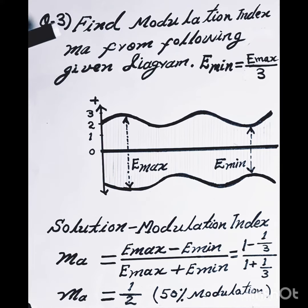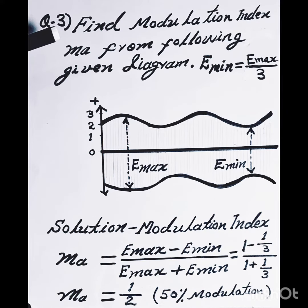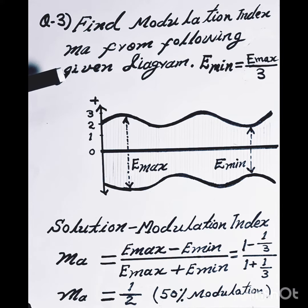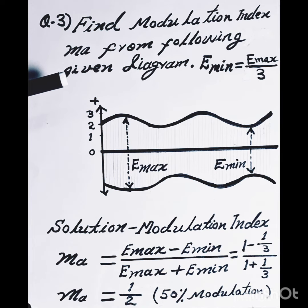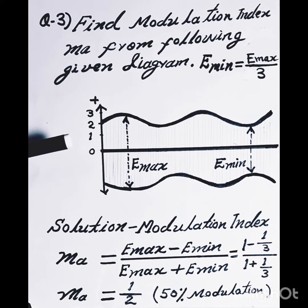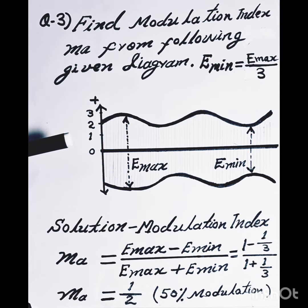Find modulation index MA from the following given diagram. E minimum equals E maximum upon 3, meaning E maximum equals 3 times E minimum.